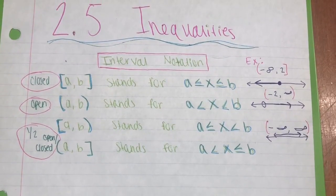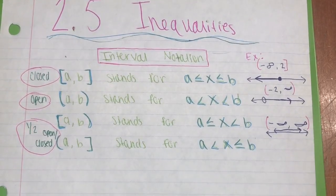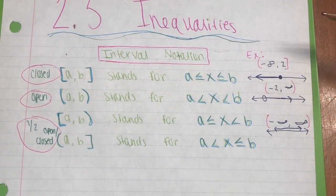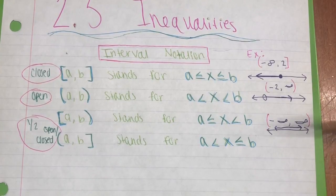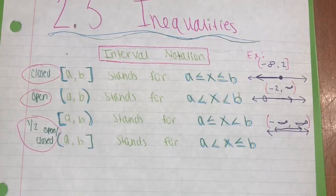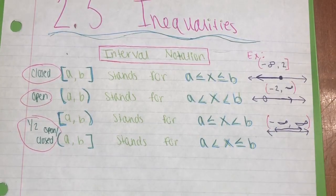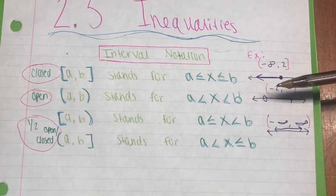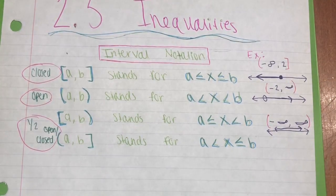So, say we wanted to look at interval notation on a number line graph. We have our first example, which is negative infinity to 2 with a parenthesis and a bracket. That indicates that our interval is half open and half closed. The bracket at 2 indicates the closed part of the graph, and then to the left — negative infinity — which is open.